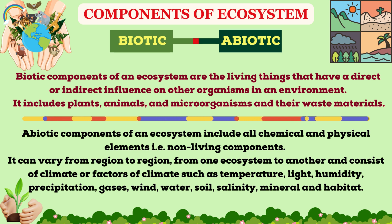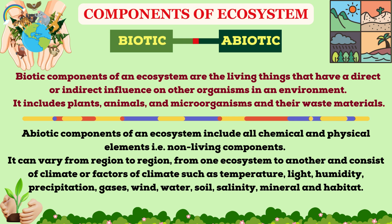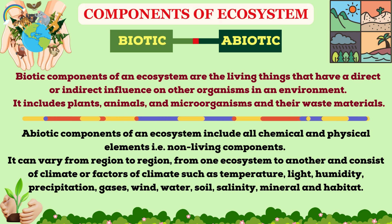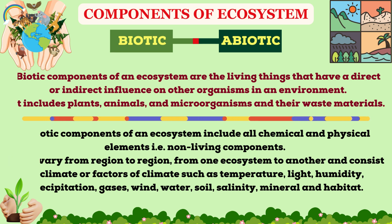Abiotic components of an ecosystem include all chemical and physical elements which are non-living. They can vary from region to region and consist of climate factors such as temperature, light, humidity, precipitation, gases, wind, water, soil, salinity, minerals and habitat.